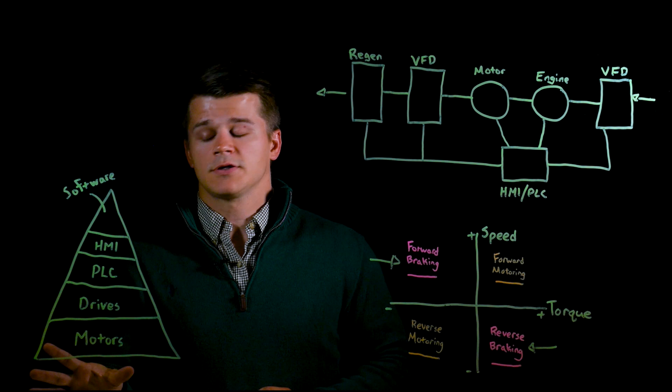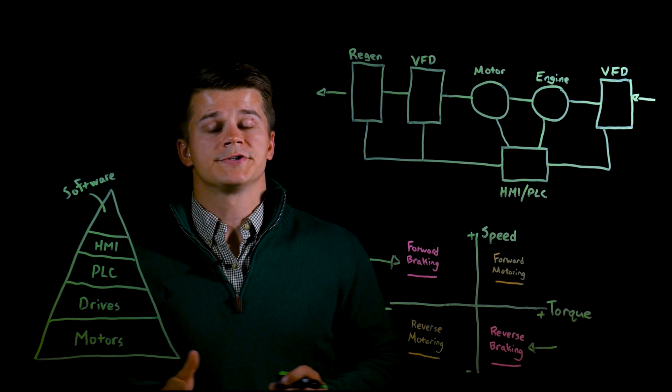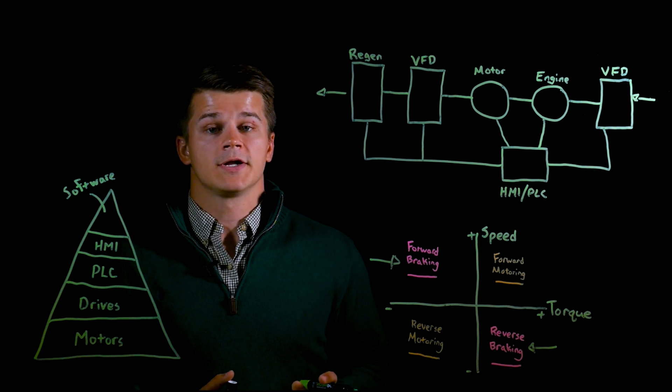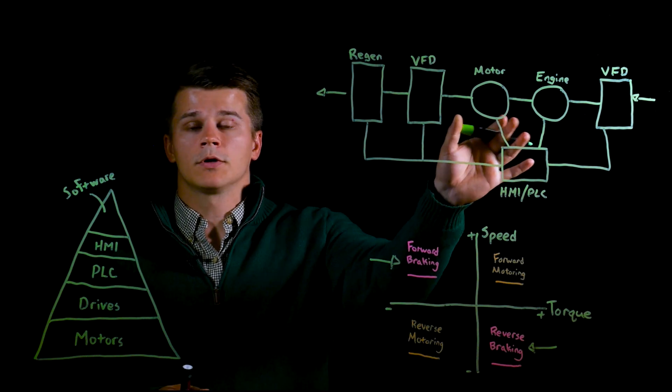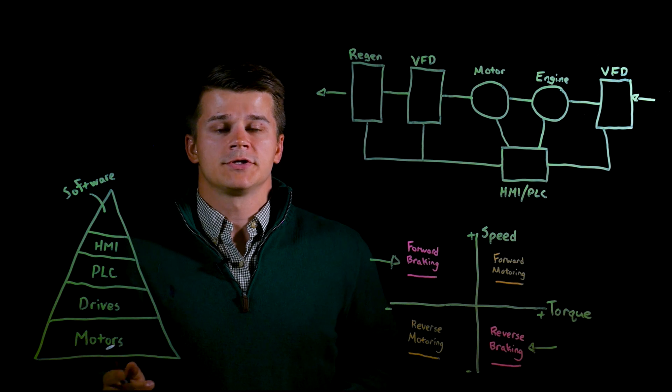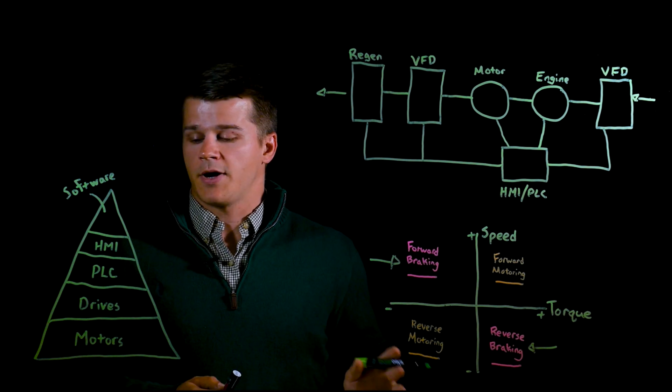This is a basic overview of the components of an automation system. The benefits of using a company like KEB are that we can provide a full system solution. For the load motor we have a wide range of induction and servo motors for both speed and power.